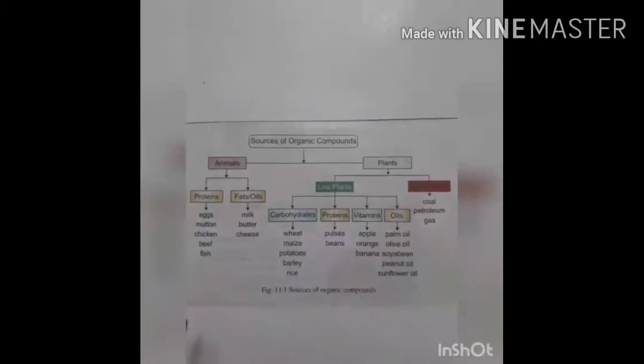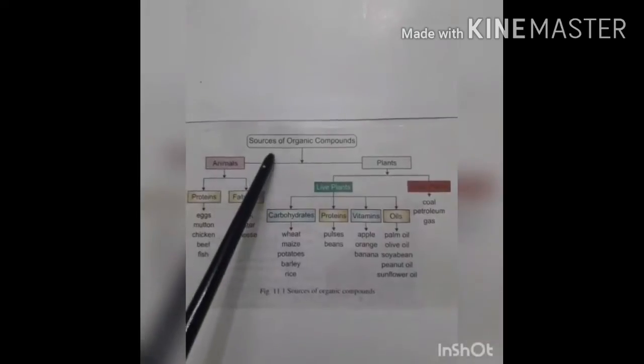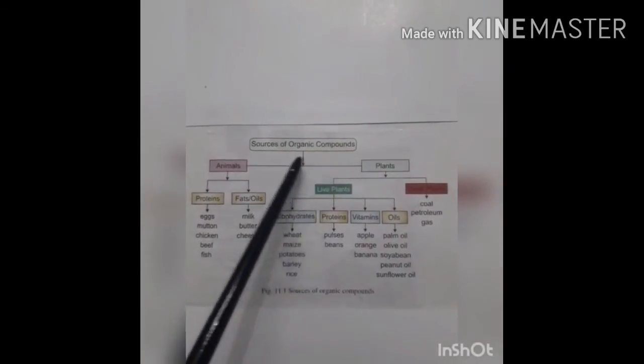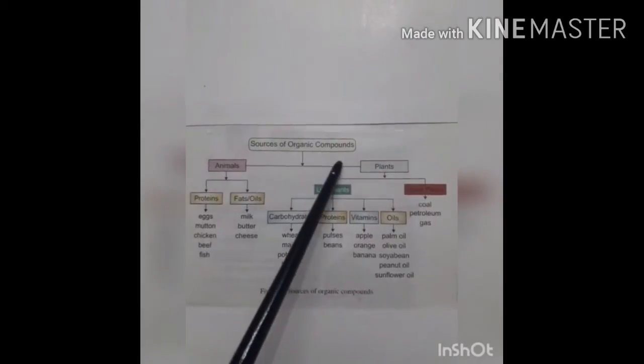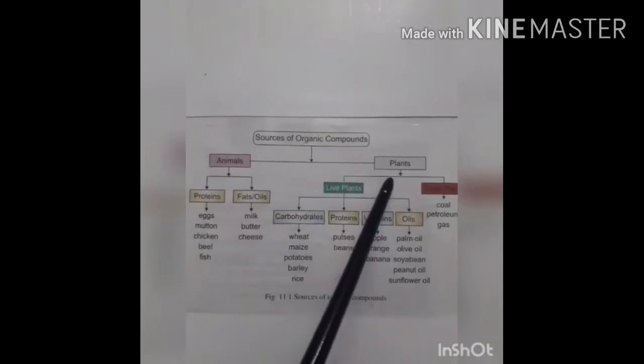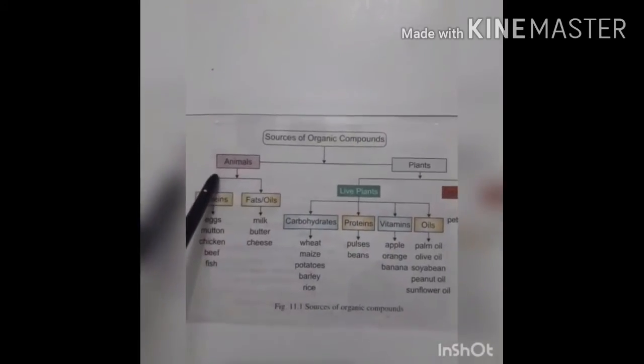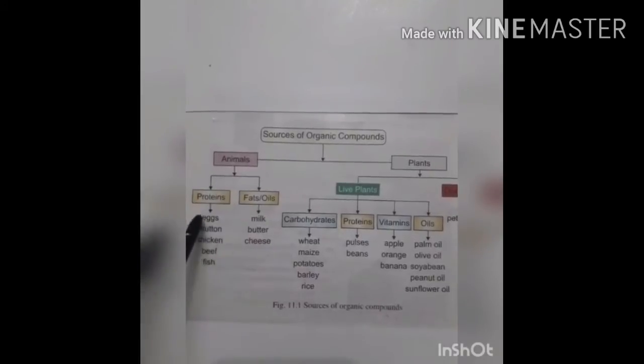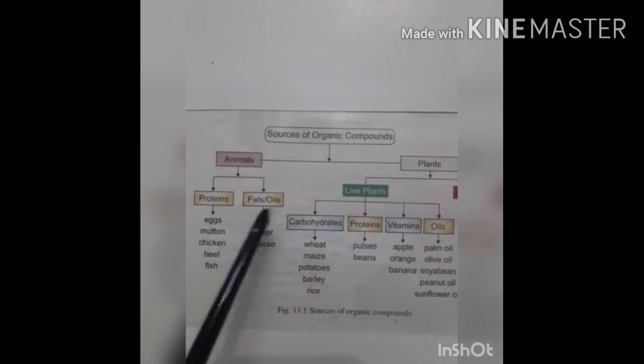Assalamu alaikum students, today we will discuss sources of organic compounds. As discussed earlier, naturally occurring organic compounds are mainly obtained from animals and plants. Animals synthesize two main groups of organic compounds which are proteins and fats.